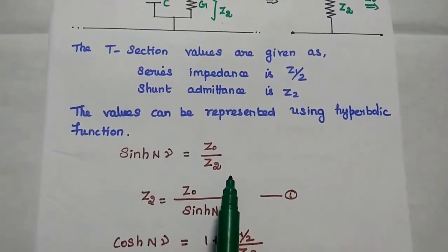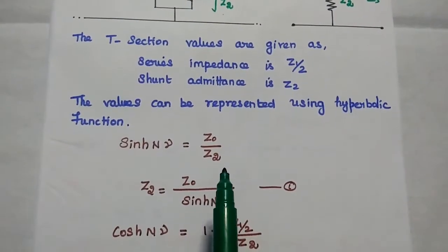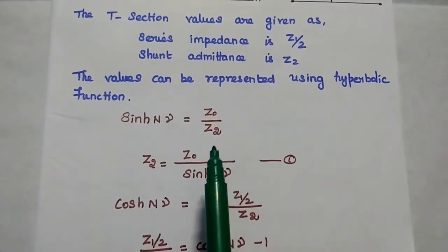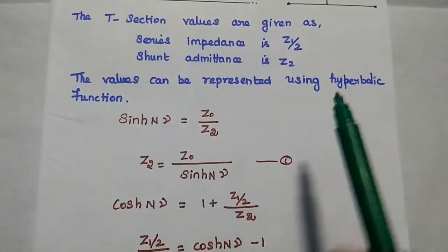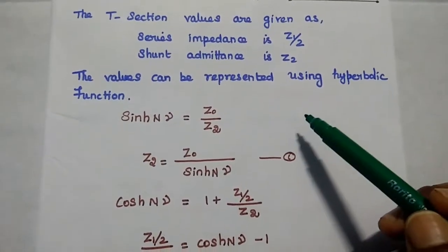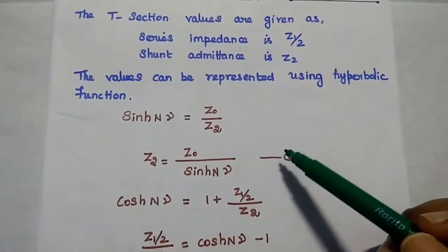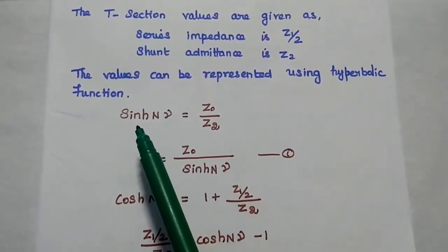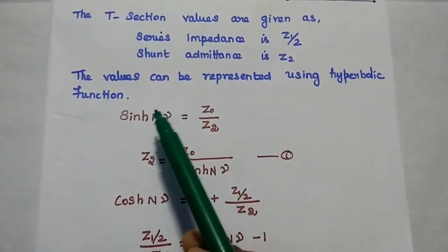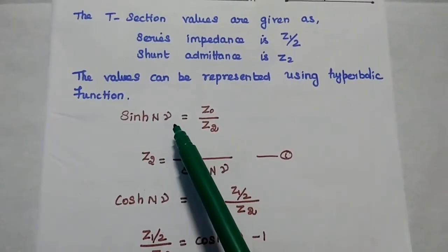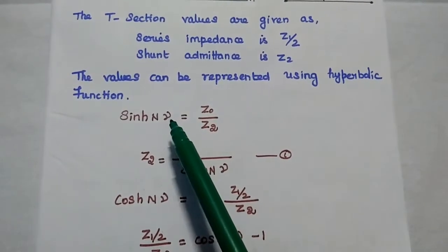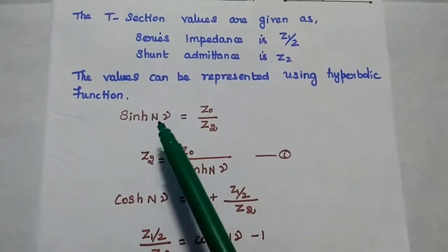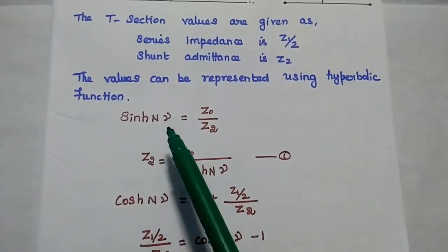Hyperbolic functions are mainly used to analyze the shape of electrical lines between two posts. Here we are using hyperbolic functions to represent the electrical line parameters. Here, sinh(Nγ) — where γ represents the propagation constant and N represents the distance between the two T-sections.